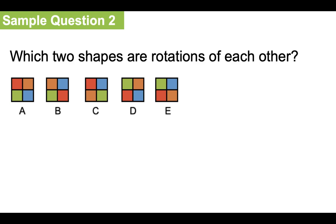They're basically the same shape with the colors in the same areas within the square, but they're just rotated. And the answer is B and D.